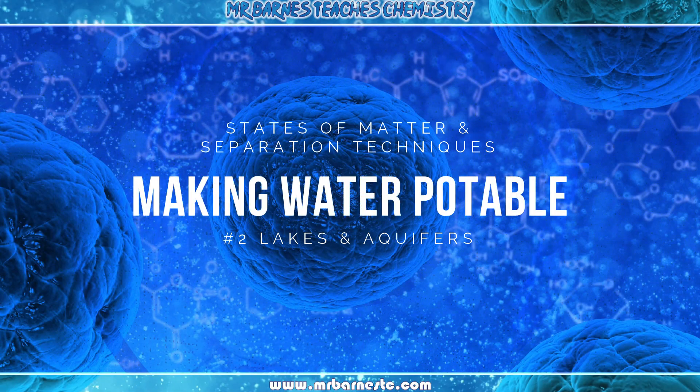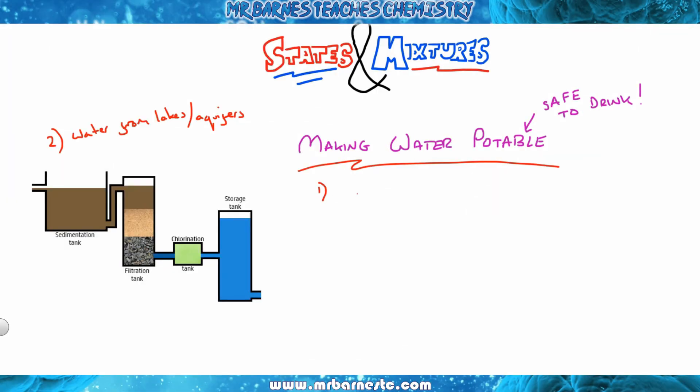The second way of making water potable is taking it from lakes or aquifers and making it safe to drink. There are four processes you need to remember. Number one, screening. Screening is basically where you get a big sieve and you take out the large pieces like the twigs and the leaves.